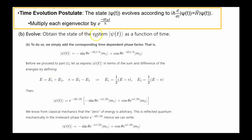Part B says: obtain the state of the system, psi of t, as a function of time. This is an example of the time evolution postulate. We know the state at t equals 0, which is negative sine theta times |m1⟩ plus cosine theta times |m2⟩. The time evolution postulate tells us to multiply each eigenvector by the phase factor e to the minus i E_n t over h-bar. So psi of t equals the first eigenvector multiplied by e to the minus i E1 t over h-bar, plus the second eigenvector multiplied by e to the minus i E2 t over h-bar, where E1 is related to mass 1 and E2 is related to mass 2.